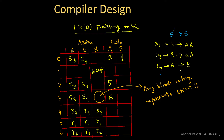In row number one, which represents state i1 containing only the augmented production, we consider the accept action for the dollar symbol and nothing else in the other cells. That is where we stopped our discussion last day.